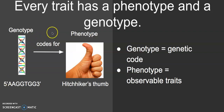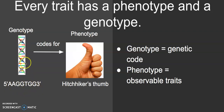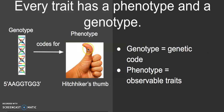Every trait has a genotype and a phenotype. A genotype is the nucleotide bases — the letters that make up a genetic code — and that codes for a particular set of proteins. A phenotype is how we see that trait expressed physically in a person. So genotype is the letters, and phenotype is what we actually see on a person that corresponds to that physical change in the protein. These are observable traits, and every single trait has both.